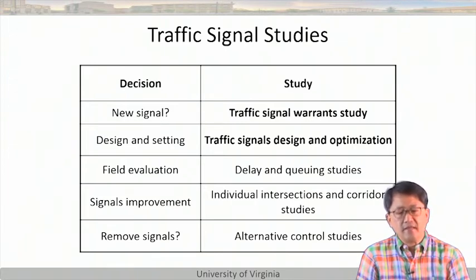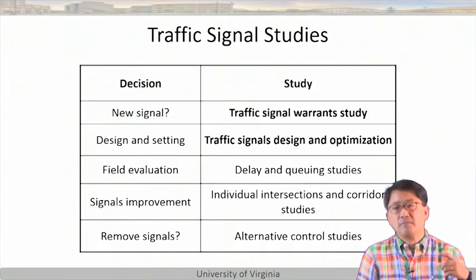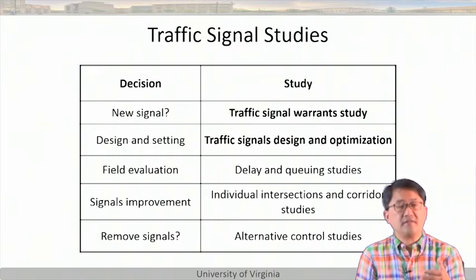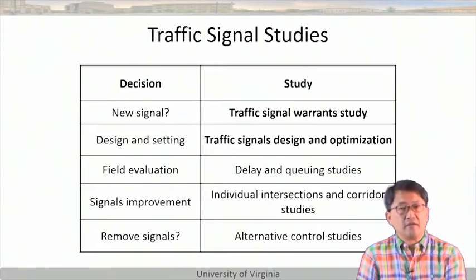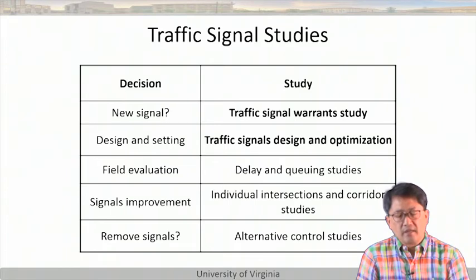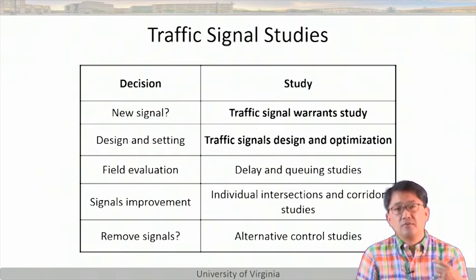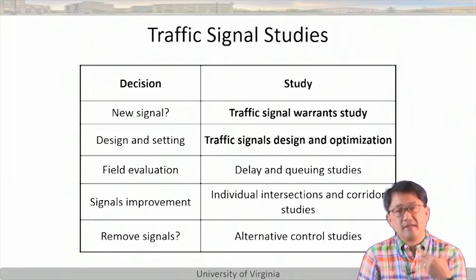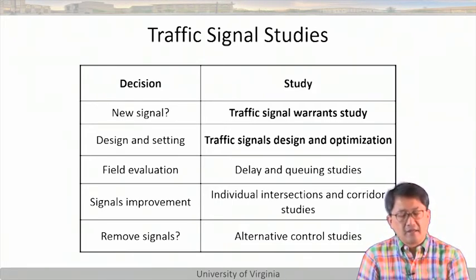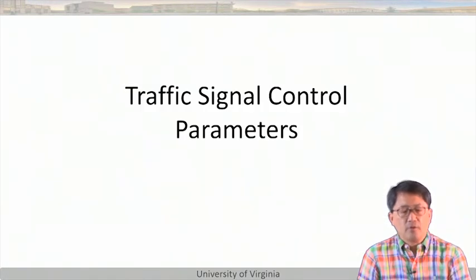Design decisions include lane assignment — do we want left and through going together versus separate left turns — and optimizing cycle length and green durations. Field evaluation uses common-sense methods: looking at queue lengths, corridor analysis, and probe vehicle trial runs. Nowadays people use GPS to tell at the end of a run which signals have good progression, where you stop, and whether improvements can be made.